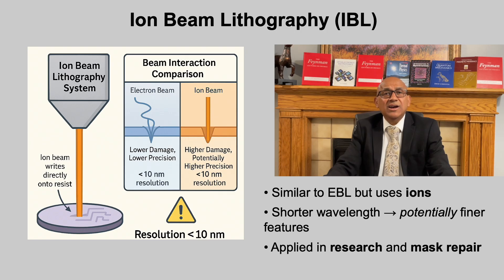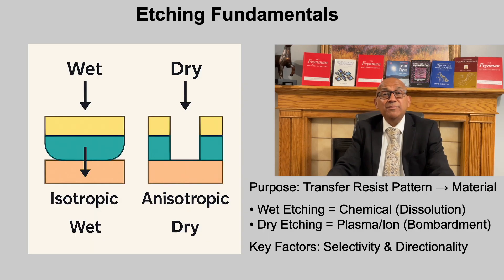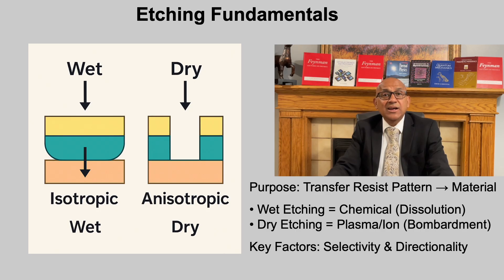After pattern definition, etching transfers those patterns into the underlying material, selectively removing exposed regions while protected areas remain intact. Two main categories exist: wet etching using liquid chemical solutions, and dry etching using plasmas or energetic ions. The critical attributes are selectivity — essentially removing one material over another — and directionality, controlling whether the process is isotropic or anisotropic. Wet etching is generally isotropic, while dry etching can achieve vertical, well-defined side walls essential for nanoscale electronics.